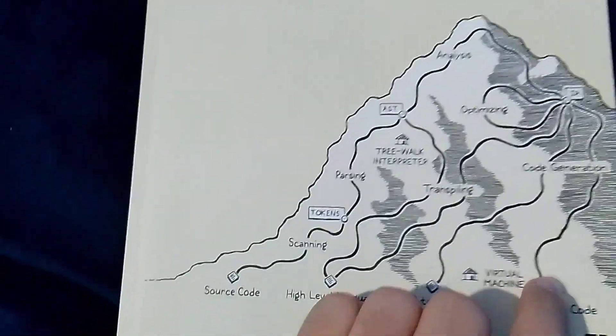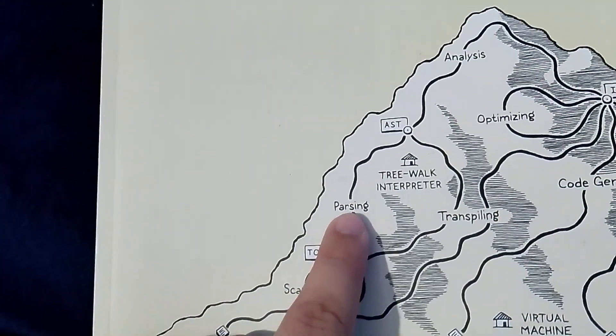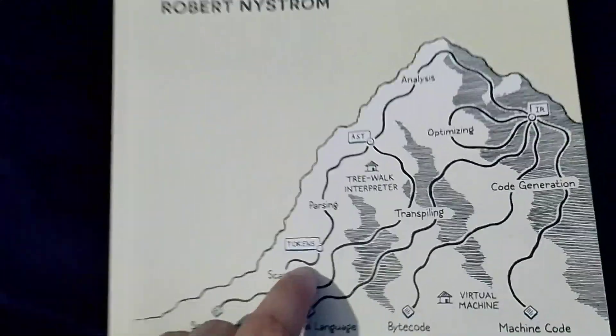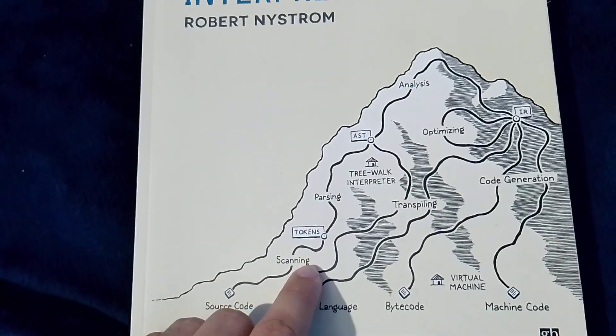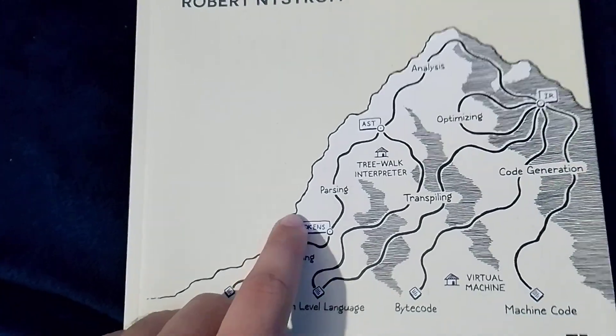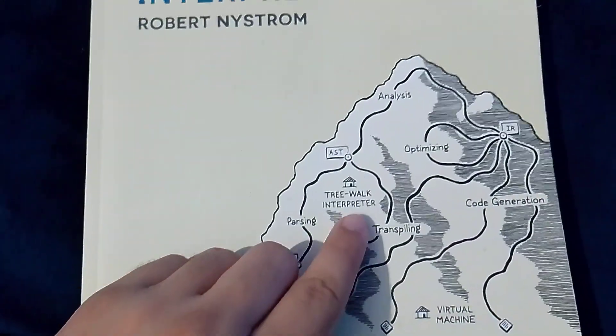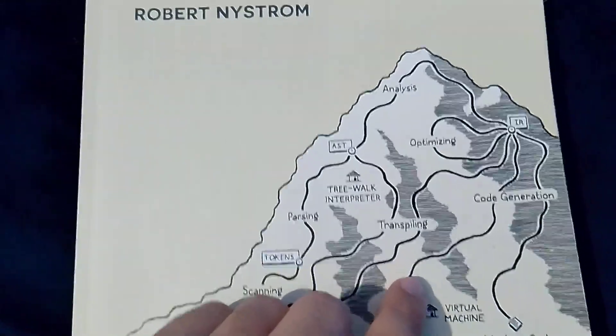Here. So, here he is going to explain what is scanning, what is a token, what is passing, and how you can see, it's like a mountain. Like you will have to, from the bottom to the up, and passing through every step. So, here he is going to explain that in more details.